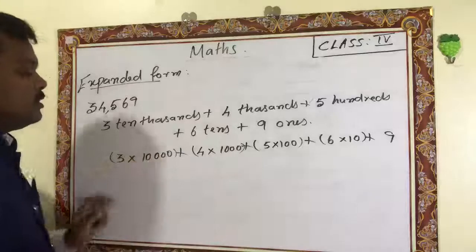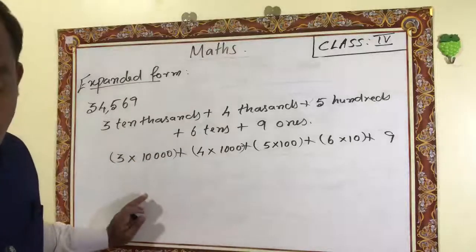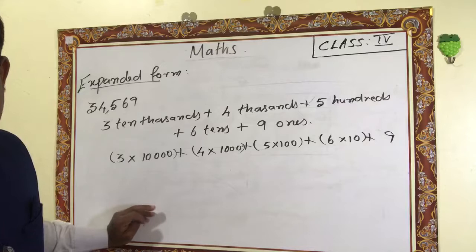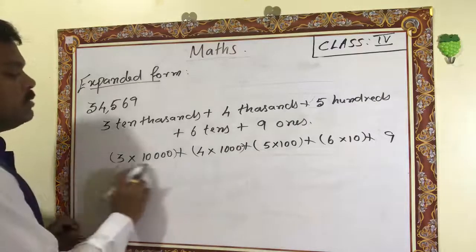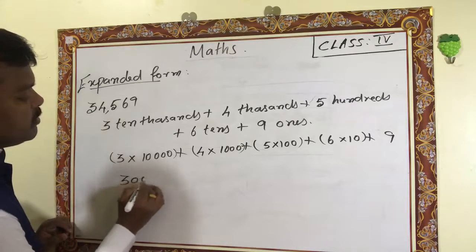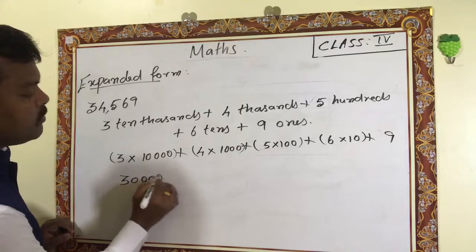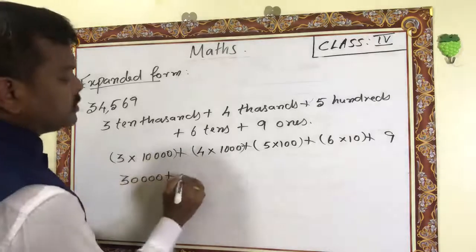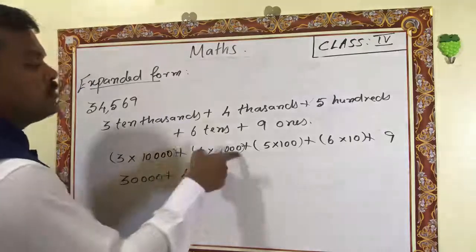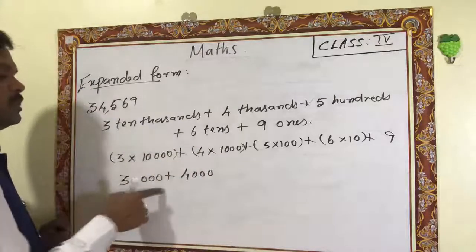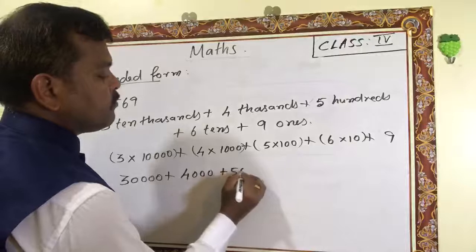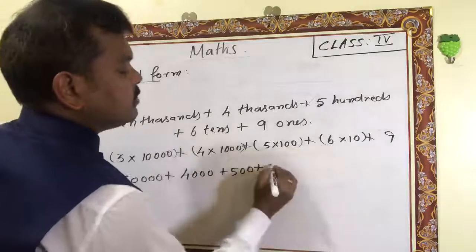Okay, this is one way. There is one more way we can write it. Three times ten thousand equals thirty thousand; four times thousand equals four thousand; five times hundred equals five hundred; six times ten equals sixty; plus nine. So these are different ways to write expanded form.